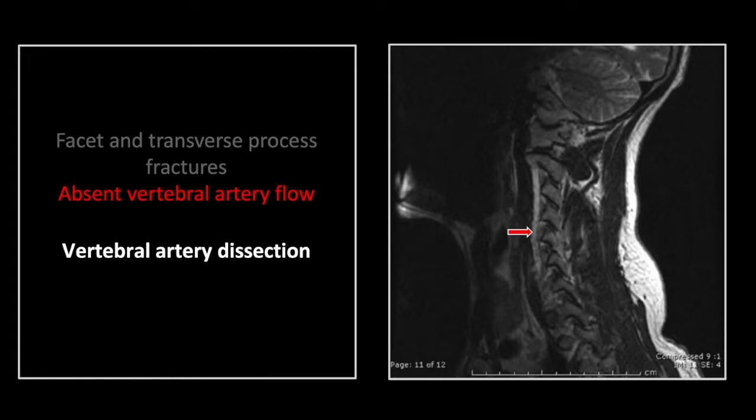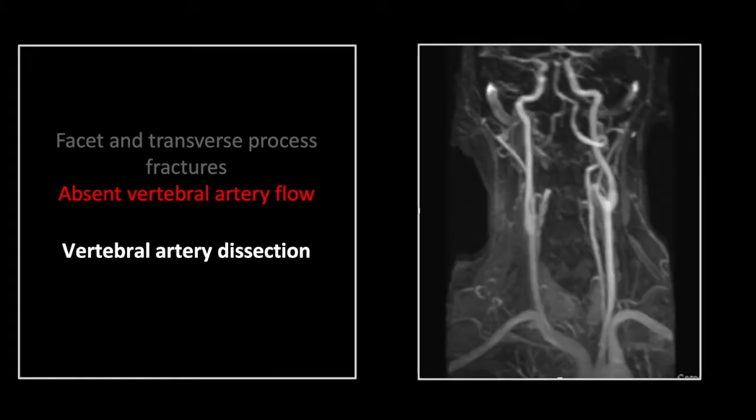Since encountering this case early in my career, I have sought that artery on every sagittal image, and it has often borne fruit. On the 3D reconstruction, you can see the right vertebral artery is simply absent throughout its length.